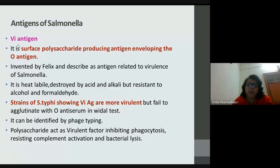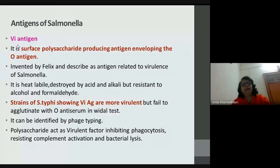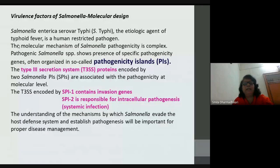Salmonella carrying Vi antigens are more virulent because the polysaccharides they produce inhibit phagocytosis, preventing macrophages from stopping the invasion. They also resist complement activation, so complement proteins fail to lyse the bacteria through cytotoxicity. This gives Salmonella the opportunity to migrate and colonize the body, and these bacteria can spread the disease rapidly even during a short period in the body.